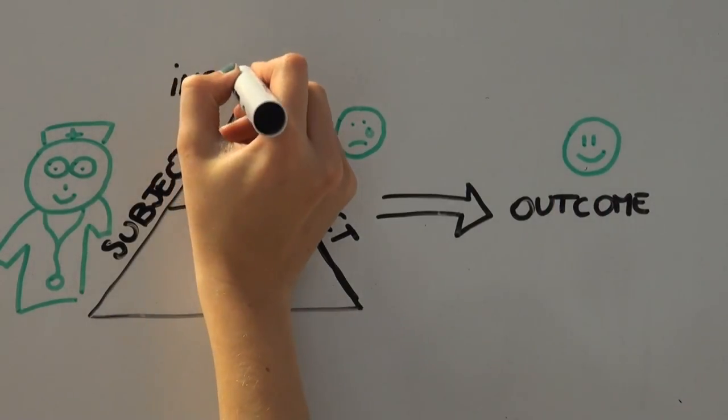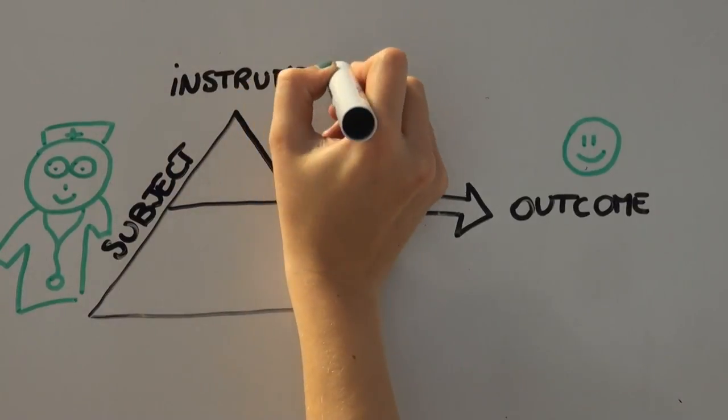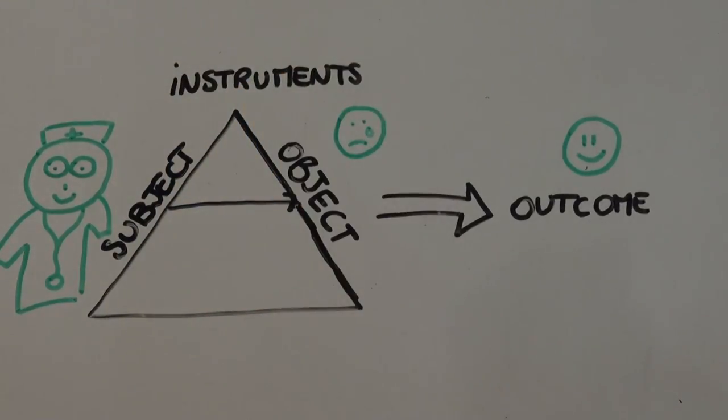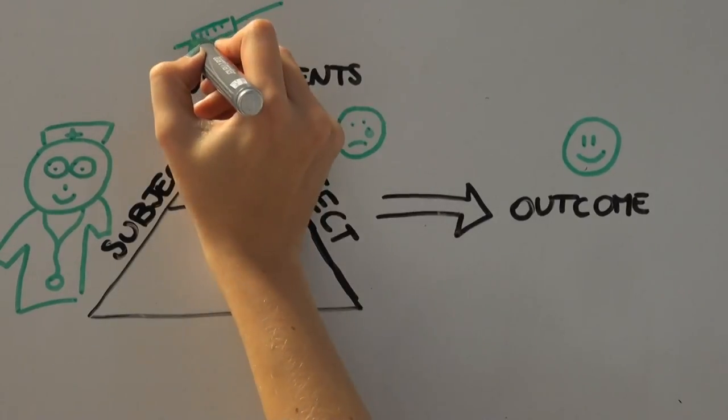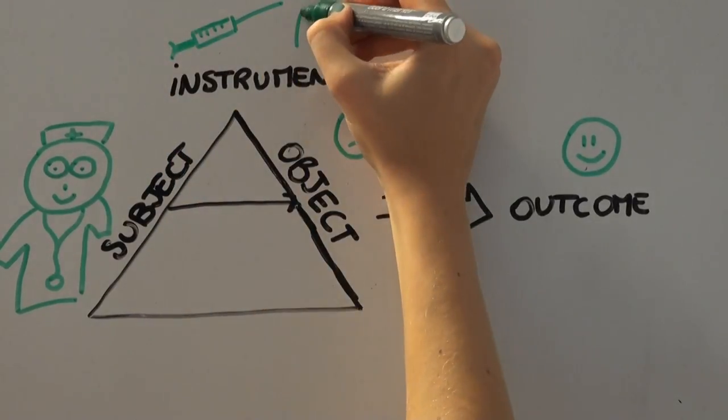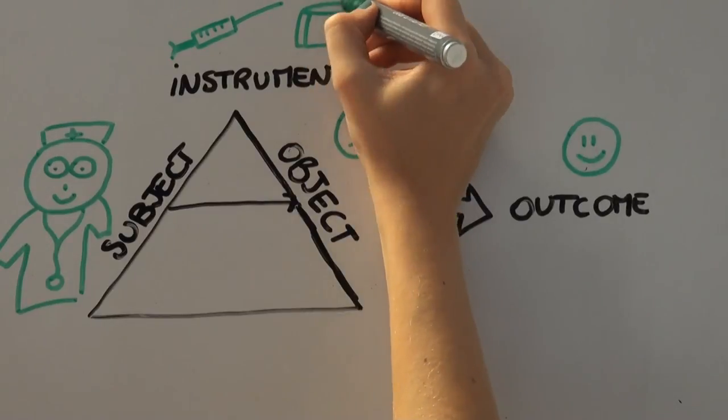To transform the objects into outcomes, the subject will need help of instruments, which can be tools or signs. For our doctor, this can be his knowledge of the brain or his know-how of surgical interventions, but also the operating tools and the operation room.